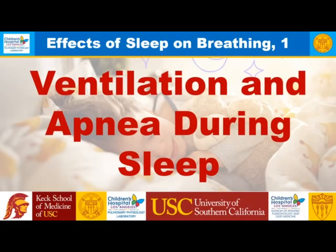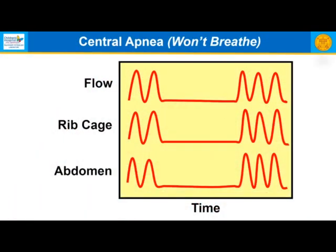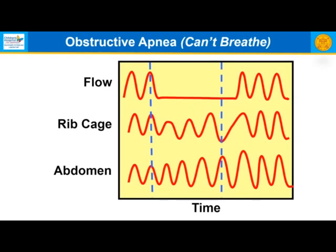Let's look at ventilation and apnea during sleep. Apnea means not breathing, and there are two types. Central apnea — sometimes called 'won't breathe' — means there is no respiratory effort, so there is no ribcage motion and no airflow. Obstructive apnea — sometimes called 'can't breathe' — is where one does continue to breathe, as shown by abdominal excursions representing diaphragm contraction, but there is occlusion at the upper airway so there's no flow. Ribcage motion becomes paradoxical: as diaphragm contraction occurs, the ribcage is actually drawn inward.